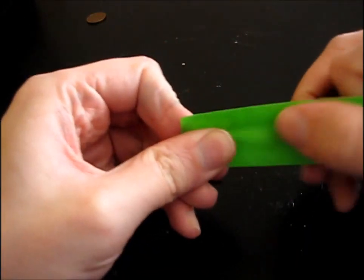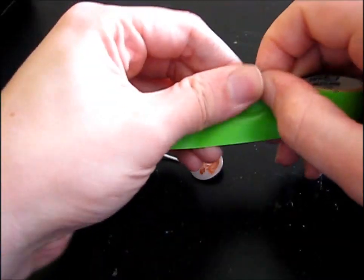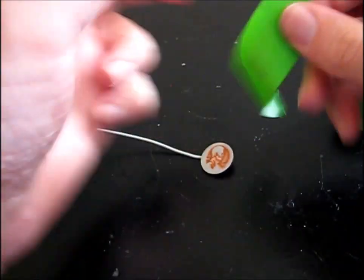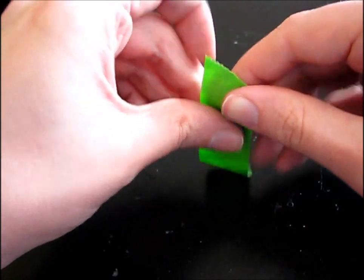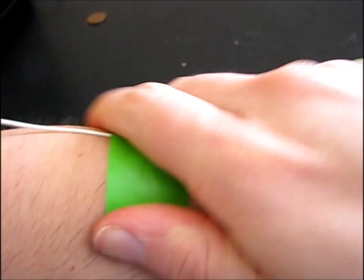To get the probe to stick, we're going to be using a little bit of painter's tape. Put that on the tail side and try to get as much surface area against the skin as possible.